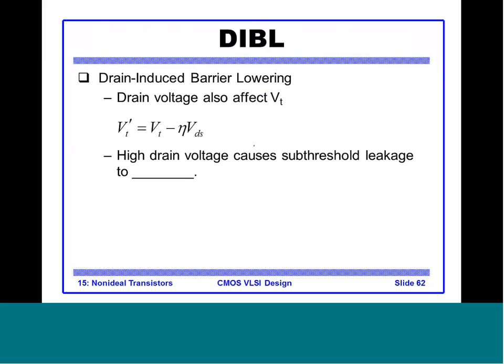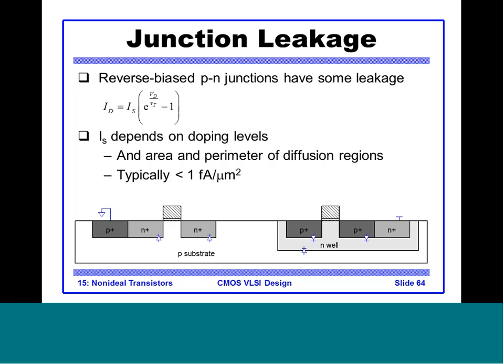There is one more effect called Drain-Induced Barrier Lowering (DIBL), which says that the drain voltage also affects VT: VT = VT − η · VDS. A high drain voltage therefore increases subthreshold leakage. Junction leakage also depends on the area and perimeter of the diffusion region. Gate leakage, caused by carriers tunneling through thin oxides, was negligible for older processes but is becoming critically important as oxide thicknesses continue to shrink.